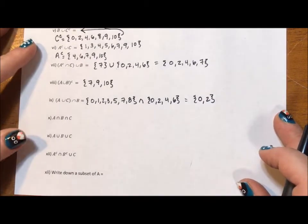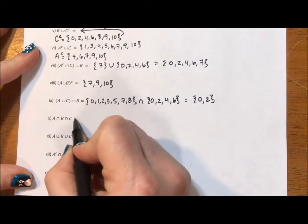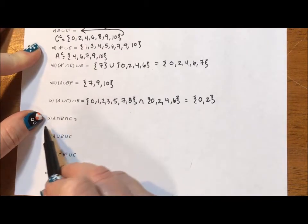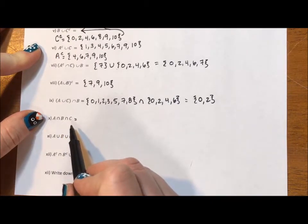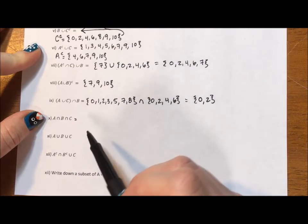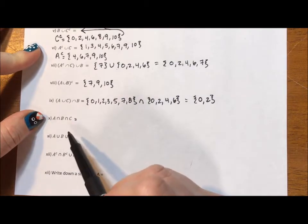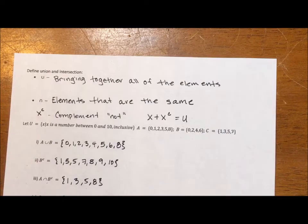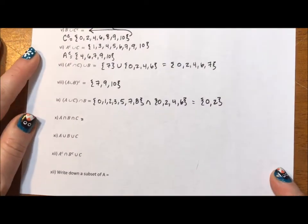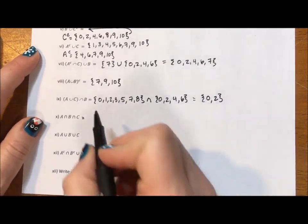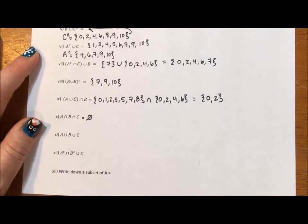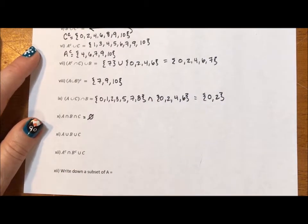For my last few, this one is asking for the intersection of A and B and C. It's what is common in all three of them. B and C have nothing in common. B are evens. C is odds. B and C actually have nothing in common. So what's common in all of them? That's going to be our empty set. There is nothing common in all of them.